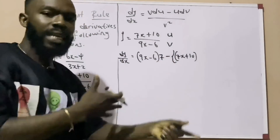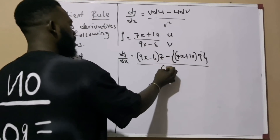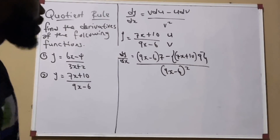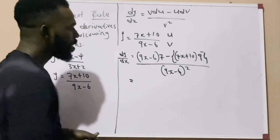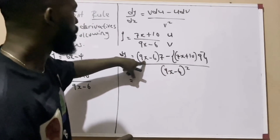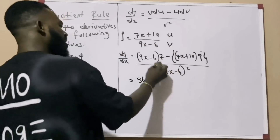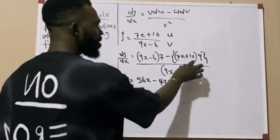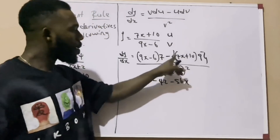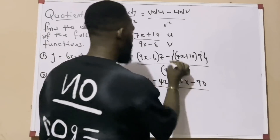Minus: now we hold u, which is 7x plus 7, and differentiate v. v is 9x minus 6; differentiating that gives 9. All over (9x minus 6) raised to the power of 2. Now opening the bracket: 7 times 9x gives 63x, minus 7 times 6 gives 42, minus 9 times 7x gives 63x, minus 9 times 7 gives 63.